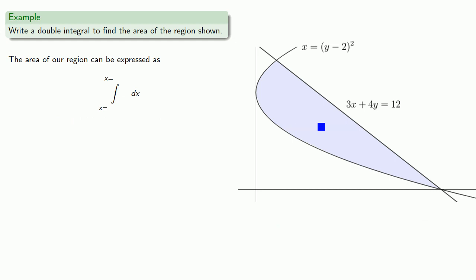Now, our least values are going to be on the curve x equals y minus 2 squared. And since that's already in terms of x, we can use that as our lower limit. Our greatest x values are going to be on the straight line, 3x plus 4y equals 12. Now we need to express this as a value of x, so let's solve for x. And that gives us our upper limit.